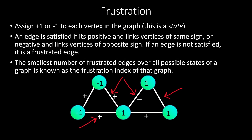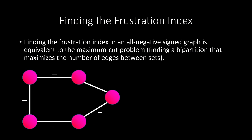As an interesting side note, the problem of finding the frustration index in a signed graph where all edges are negative is equivalent to the maximum cut problem — finding a bipartition that maximizes edges between vertices in different sets. Assigning positive-one and negative-one values to vertices is equivalent to partitioning vertices into two sets, and the state that maximizes edges with endpoints in different sets minimizes frustrated edges, since a negative edge linking endpoints of the same sign is frustrated.